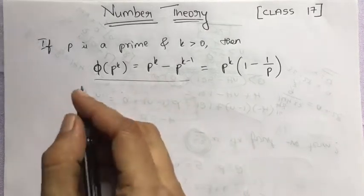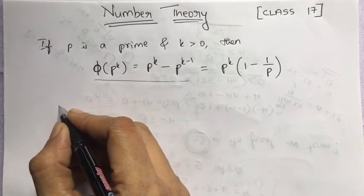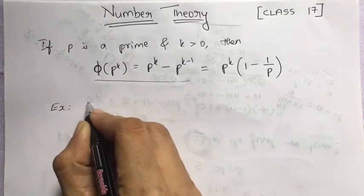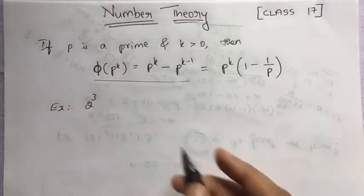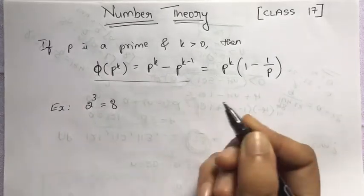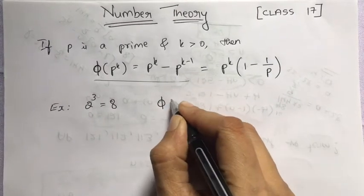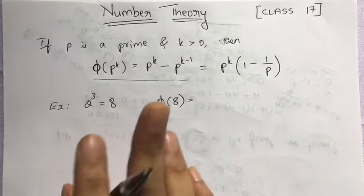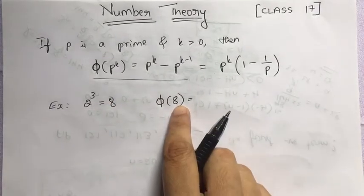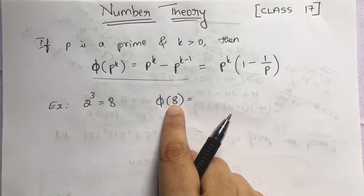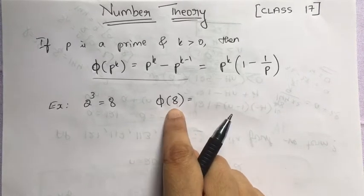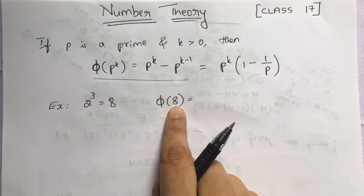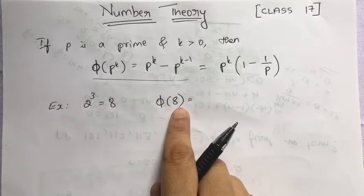Suppose for example I have 2 to the power 3, that's 8. I want to calculate phi of 8. Since it's not a prime number, one way is to write down all numbers from 1 to 8 and count the numbers which are relatively prime to 8. Since it's a small number you can do it.